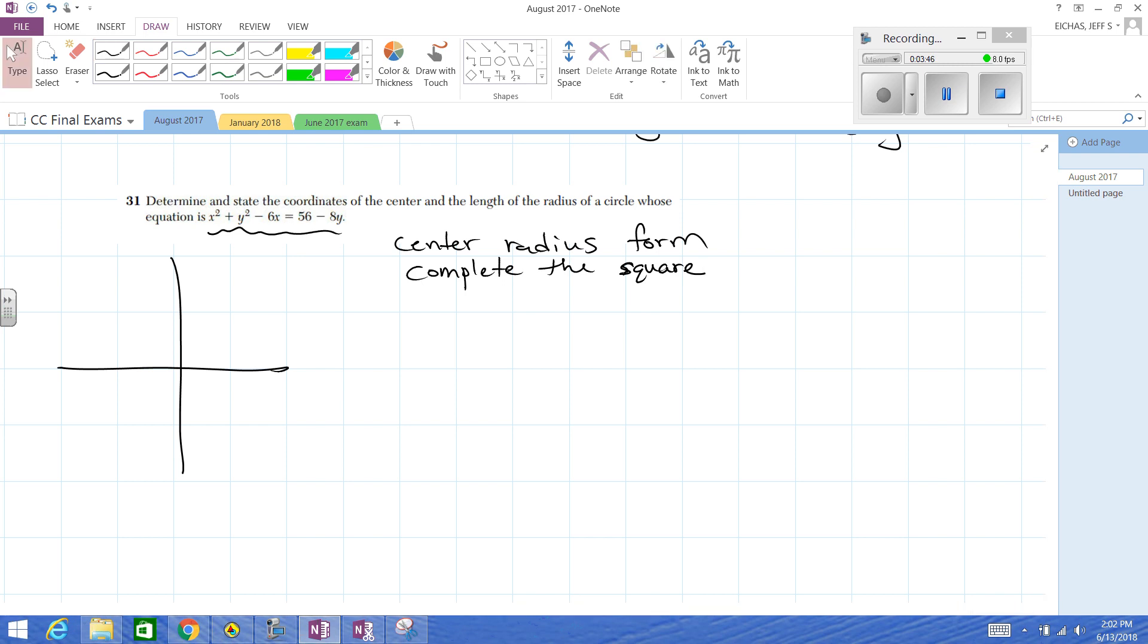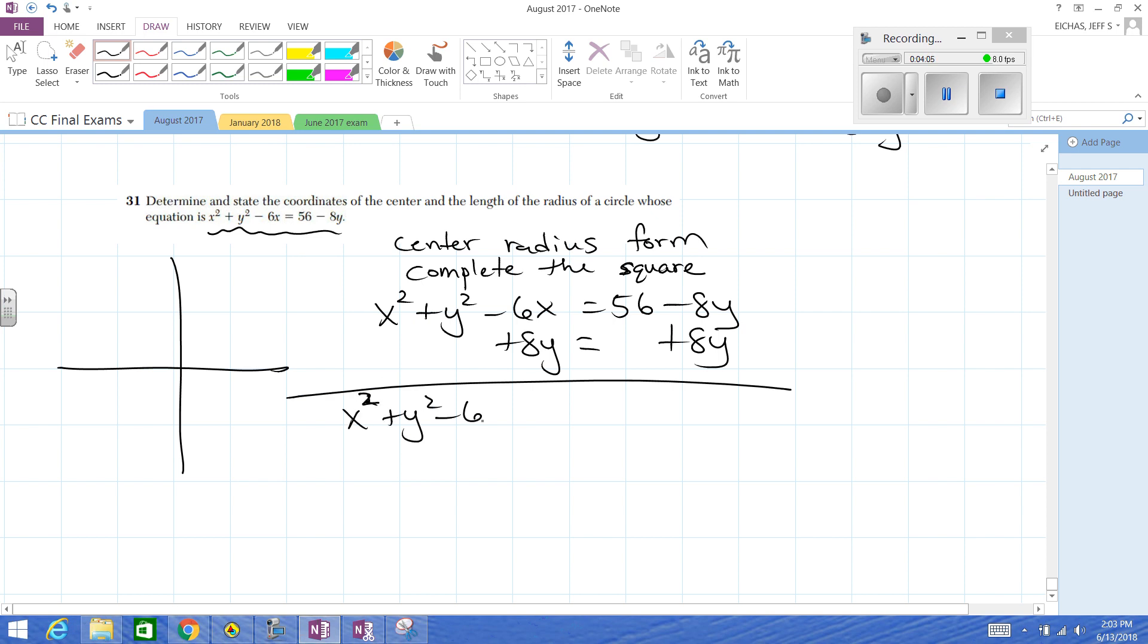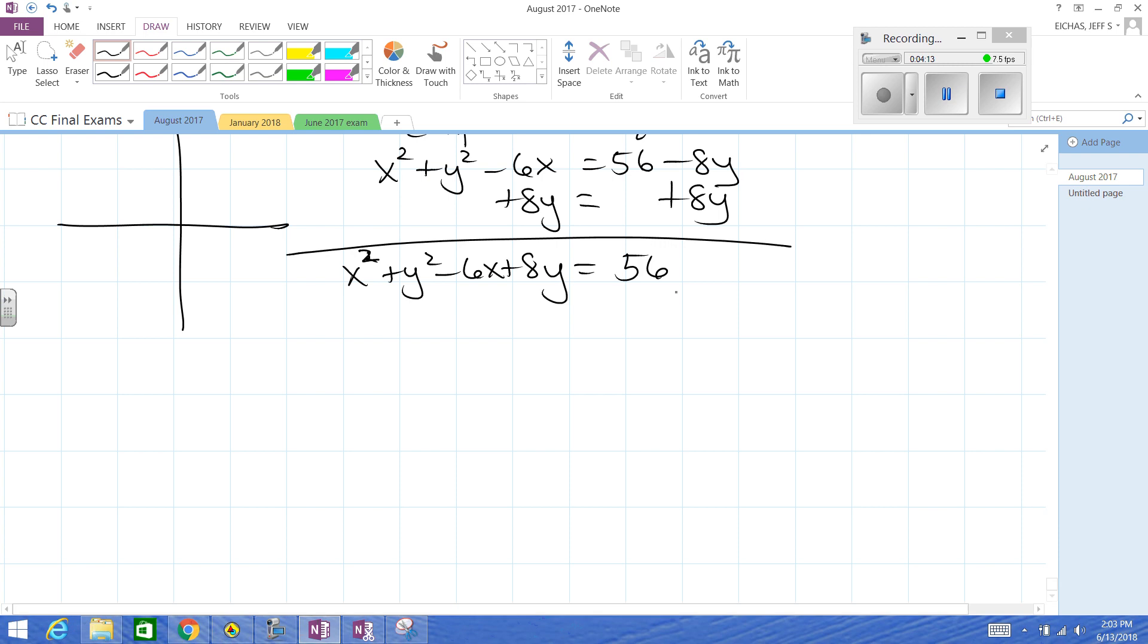So I'm going to rewrite it so that you can see where things are going to go. What we first want to do is add over the Y term. I'm not going to mess with it yet. So that's just one move at a time. I'm not going to skip any steps. Now what I'm going to do is rearrange this, and then I can get ready to complete the square.